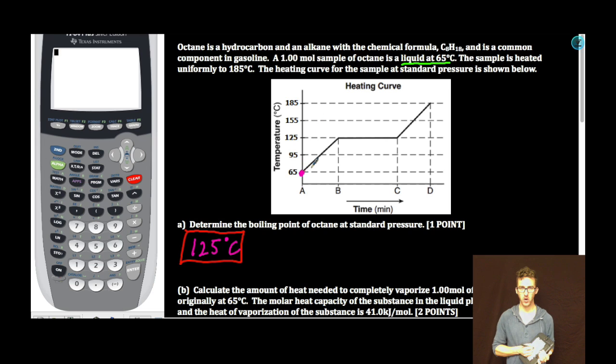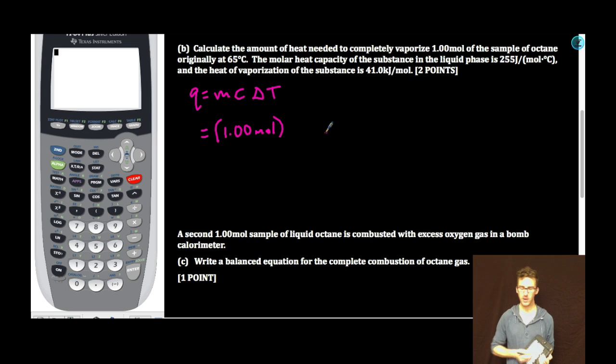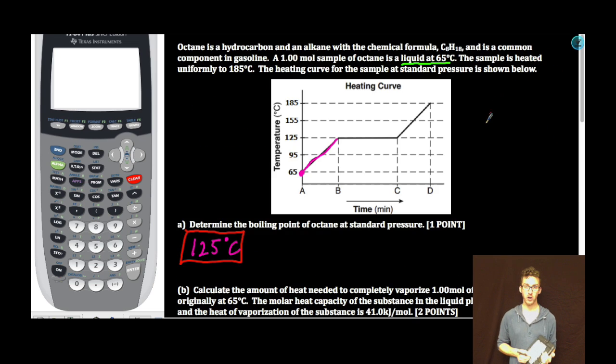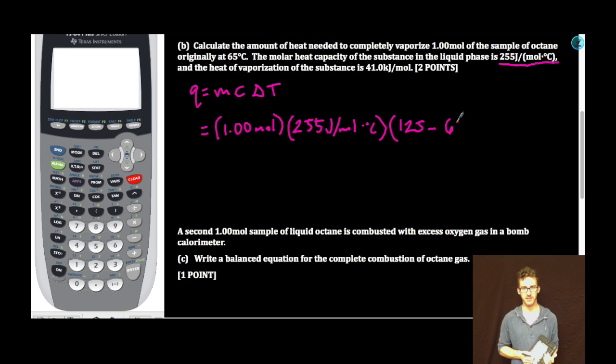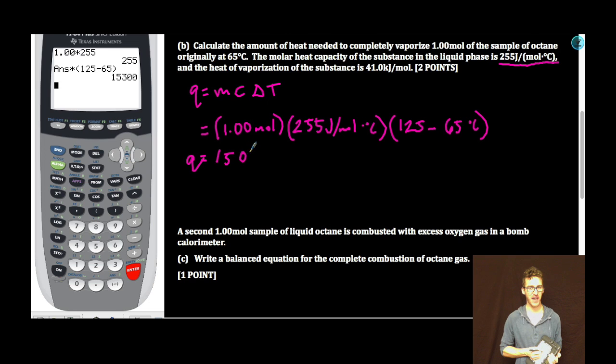Alright, so we've got 1.00 moles of octane originally at 65 degrees Celsius. Recall that on the sloping segments we're going to use MCAT. I put 1.00 mole. Now wait a minute, Mr. Boylan, I thought M was mass. You're putting in moles. This is true, but notice that the specific heat capacity is given to us in joules per mole degree Celsius. So totally fine. Times 255 joules per mole degree Celsius. Now for our temperature change, recall it's final minus initial. We're going to heat it up to 125 degrees Celsius where it'll start to boil. 125 minus 65 degrees. So to two sig figs, 15,000 joules or 15 kilojoules.